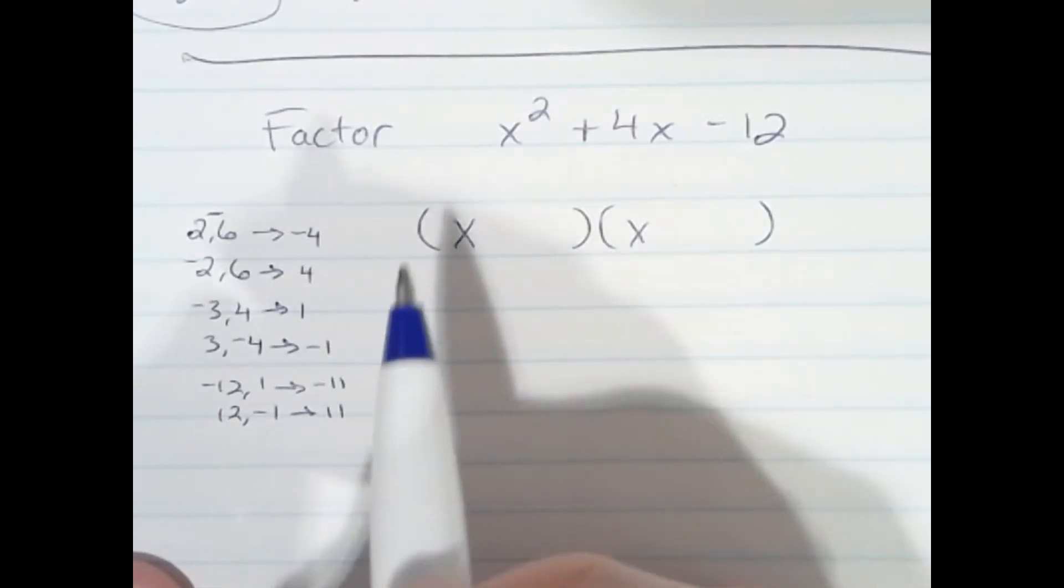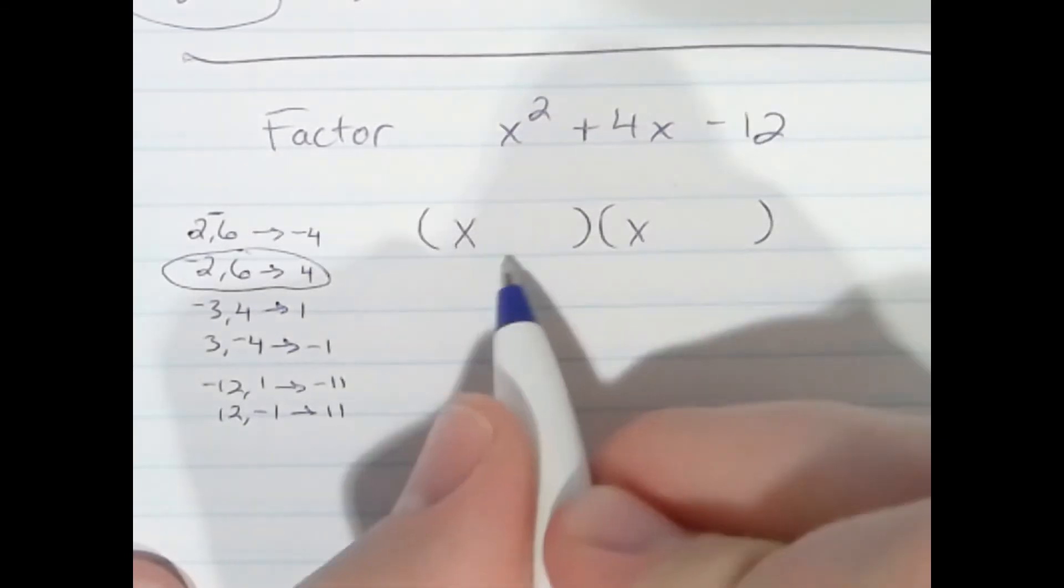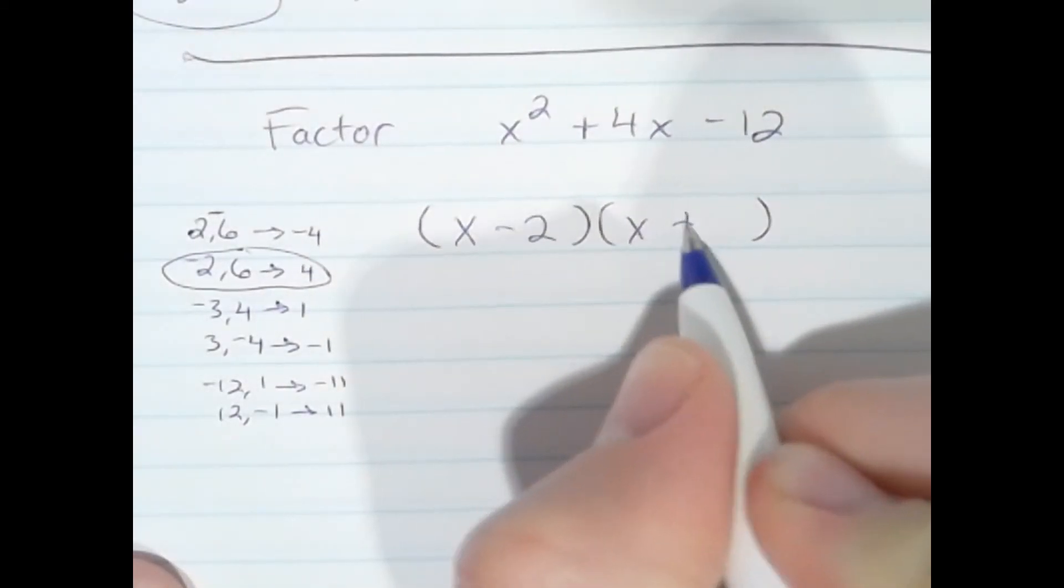And the one we want is positive 4. This combination right here wins. x minus 2, x plus 6, in any order.